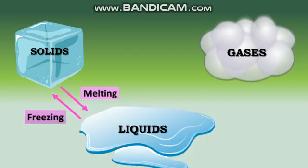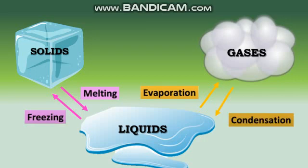For example, water changes into ice when it's cold enough to freeze. When a liquid changes into a gas, this is called evaporation. For example, water changes into steam when it's boiled in a kettle.